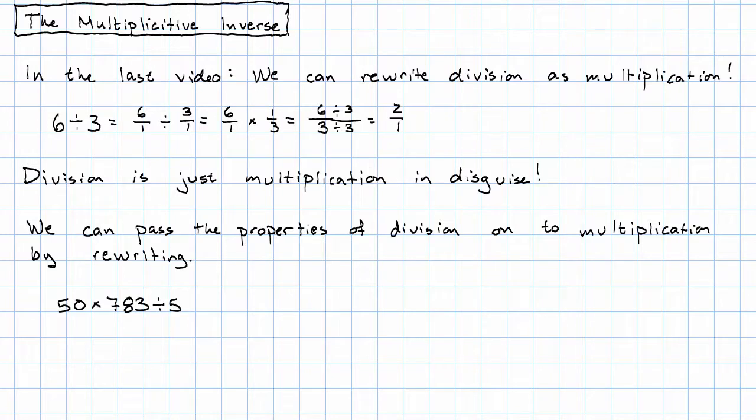If I say, for example, 50 times 783 divided by five, I'd maybe want to do the division first. And it turns out that I can do that.